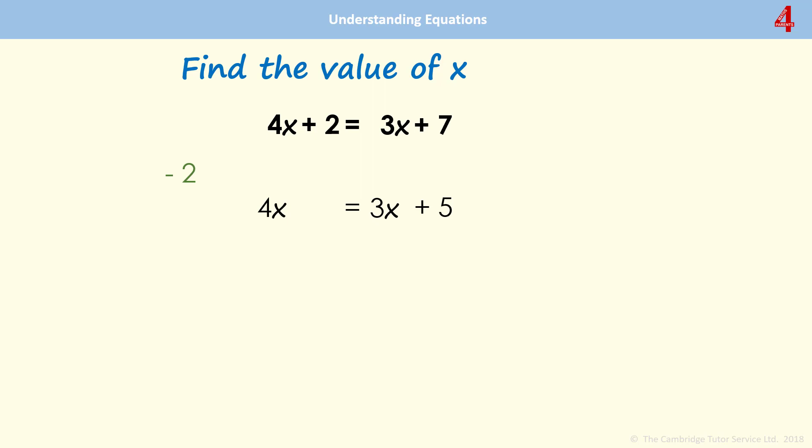Now I need to look at the side that has an x and an extra number, and I need to get rid of the x so that I just have an x on one side and the extra number on the other. So here, that's 3x. So I'm going to take away 3x from both sides. So that 4x now just becomes 1x, which is just x. And having taken away the 3x, we now just have 5 on the other side. And we've solved this equation: x equals 5.